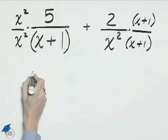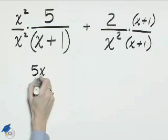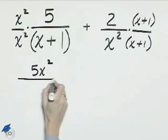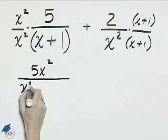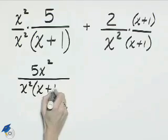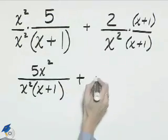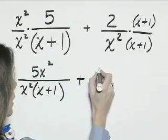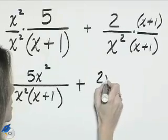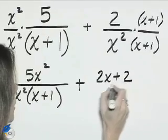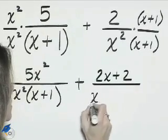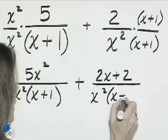The first numerator is 5x squared. The denominator is the product x squared times the quantity x plus 1. Plus the second fraction now has a numerator of 2x plus 2. The denominator is x squared times the quantity x plus 1.